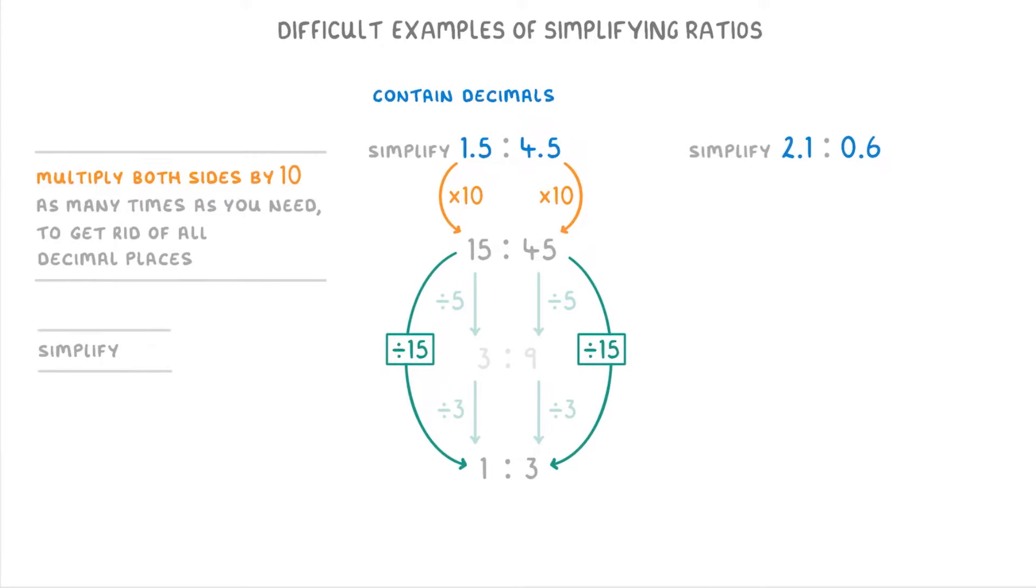Let's try the same thing for this one, where we need to simplify 2.1 to 0.6. So first, we multiply both sides by 10 to get 21 to 6. And then we can divide both sides by their common factor of 3 to get 7 to 2.